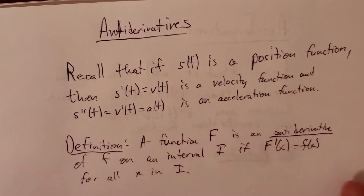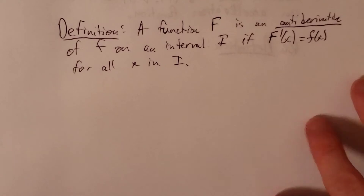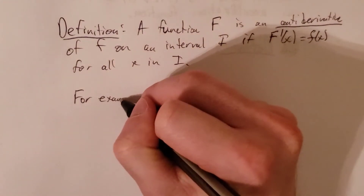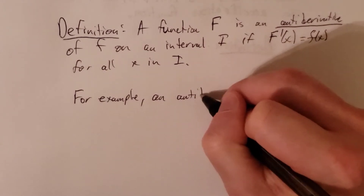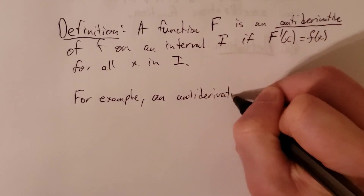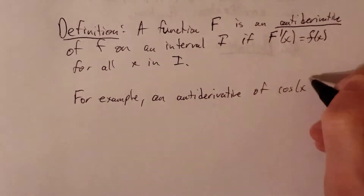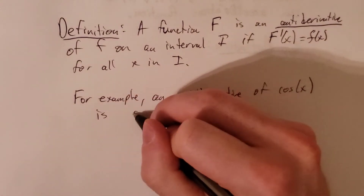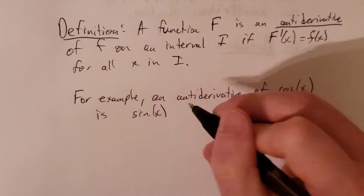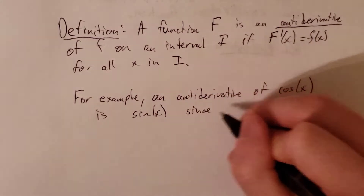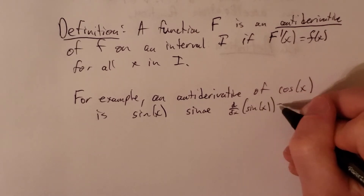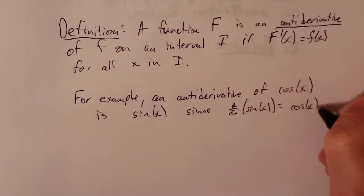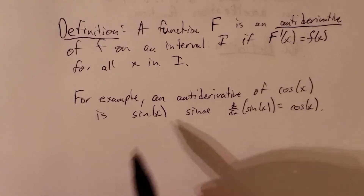As a quick example, an antiderivative of cosine of x is sine of x, since the derivative of sine of x is cosine of x. So one of our antiderivatives of cosine of x is sine of x.